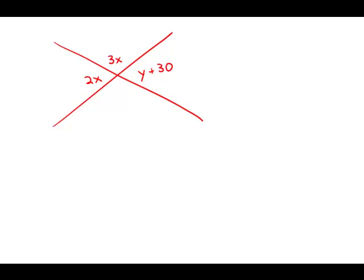In the figure above, the value of y is which of the following? Well, first of all, notice that the 2x plus the 3x, together they make a straight line. So that means that 2x plus 3x must add up to the degrees in a straight line, that's 180 degrees.